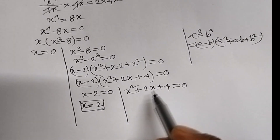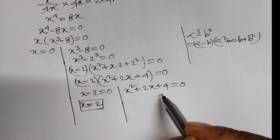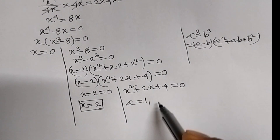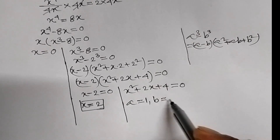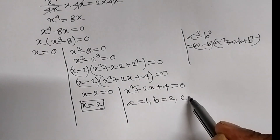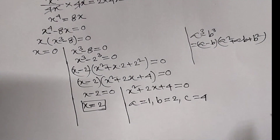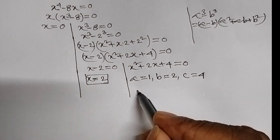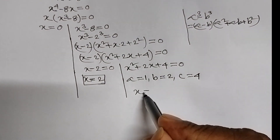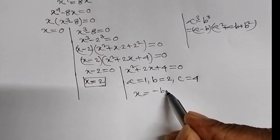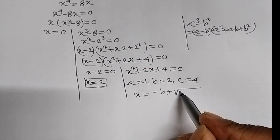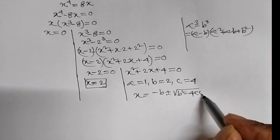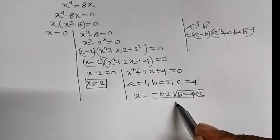The second equation is of the form ax square plus bx plus c equal to 0. Therefore a equal to 1, b equal to 2, c equal to 4. We can say x equal to minus b plus or minus root over b square minus 4ac, whole divided by 2a.